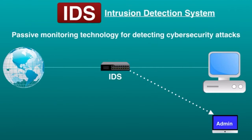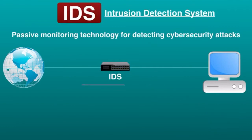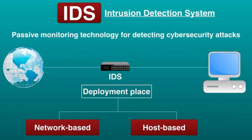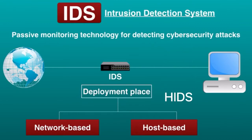IDS can be classified in a couple of ways. One is by its deployment location, which includes network-based IDS and host-based IDS. Network Intrusion Detection System monitors packets moving in and out of a network, monitoring all traffic to catch security threats — this option is preferred for enterprises because it provides much broader coverage. Host Intrusion Detection System monitors a single computer, including traffic and client activity. For example, it might alert the administrator if a video game is accessing private files it should not be accessing.